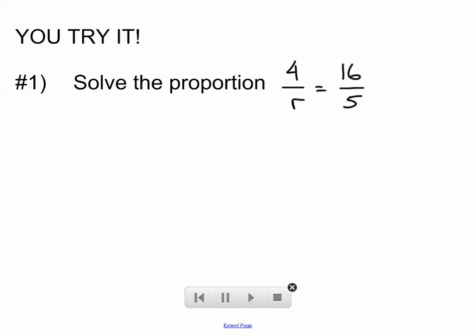All right, so let's do some you try-its. Give this one a go. Press pause, and when you press play again, my solution will be waiting for you with all my work. All right, so we've got a proportion. We're going to do cross products. 4 times 5 should equal 16 times R. Simplify both sides and divide both sides by 16. 20 divided by 16 is 5 fourths. Pretty straightforward.